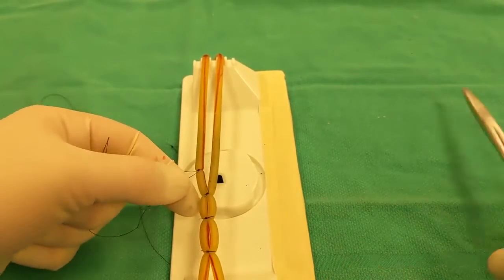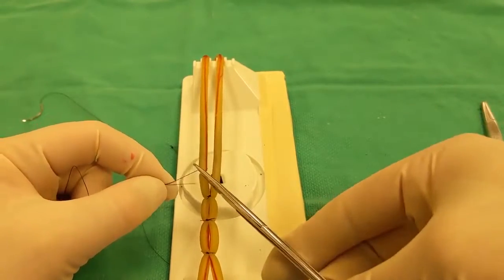And then we're going to cut these tags short. So I'll cut with the skinny side of the OR scissors down, rotate, and snip.